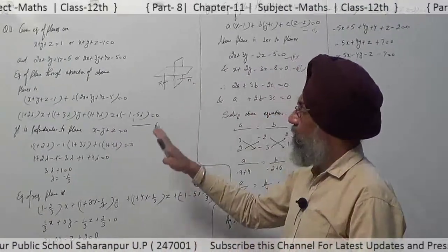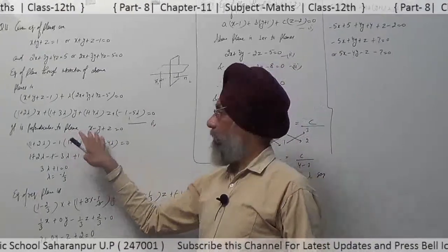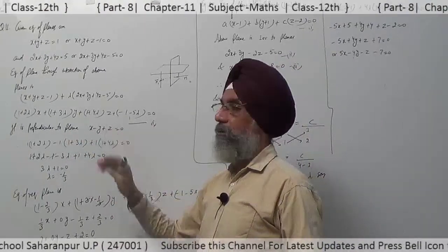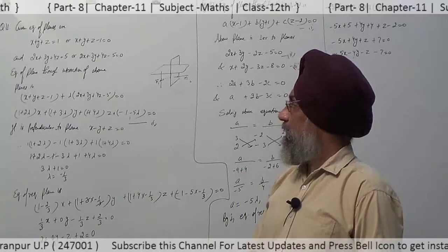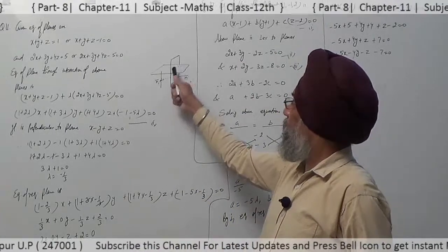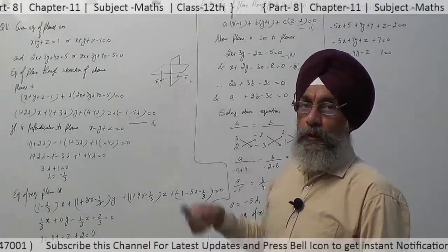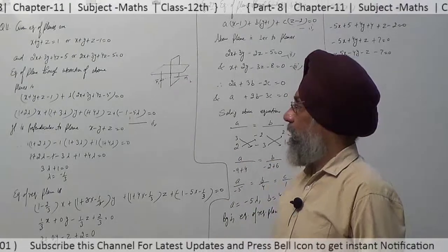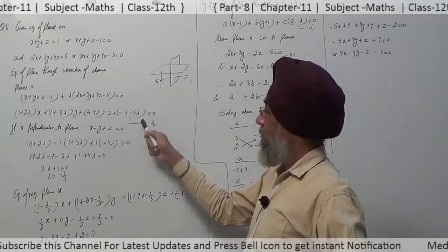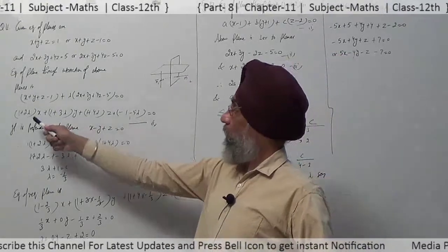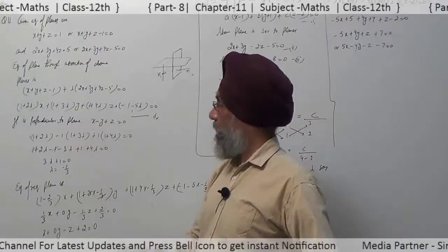This plane is perpendicular to the plane x - y + z = 0. Since they are perpendicular to each other, the normal vectors to both planes are also perpendicular to each other. The normal vector to our plane has directional ratios (1 + 2λ), (1 + 3λ), (1 + 4λ), whereas for the given plane they are 1, -1, 1.